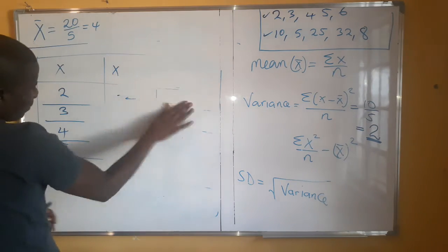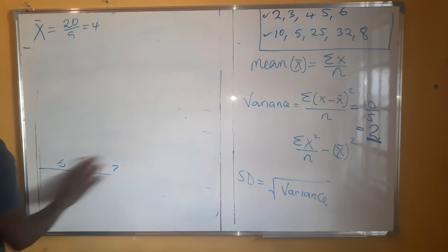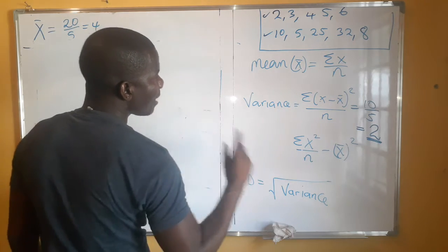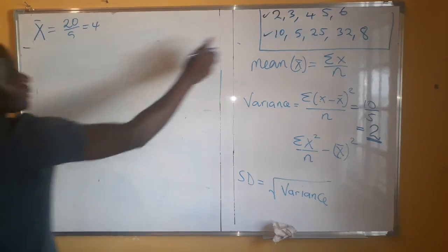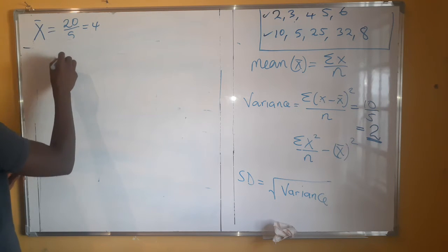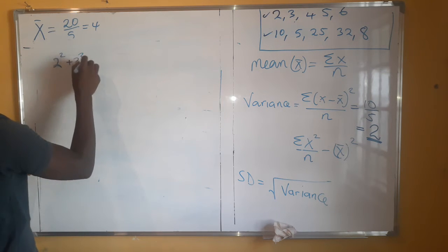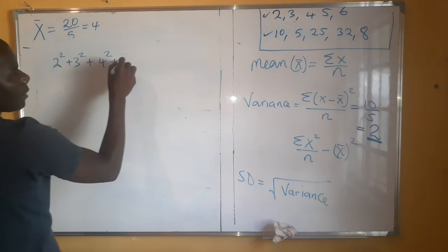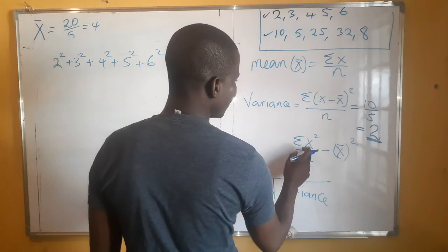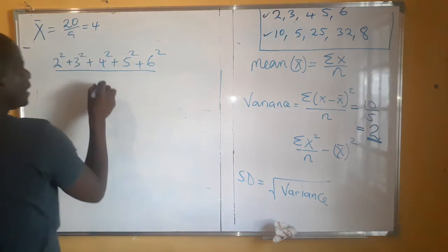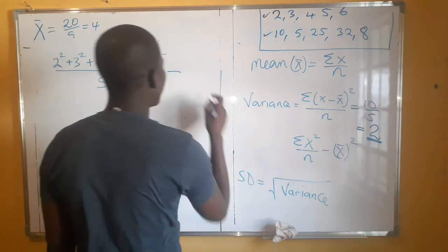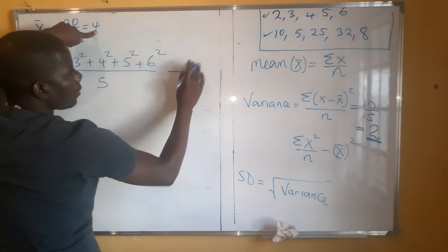You'll pick whichever formula is easier for you. For the second formula, we need the summation of x squared divided by n, minus x-bar squared. The sum of x squared means 2 squared plus 3 squared plus 4 squared plus 5 squared plus 6 squared, all divided by 5, minus x-bar squared — which is 4 squared, or 16.